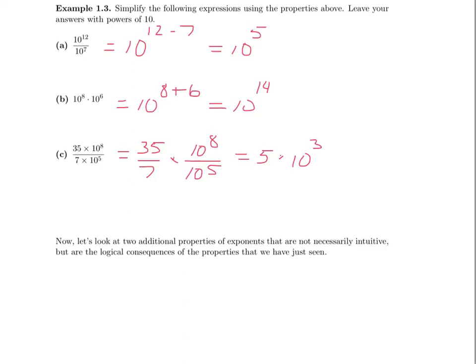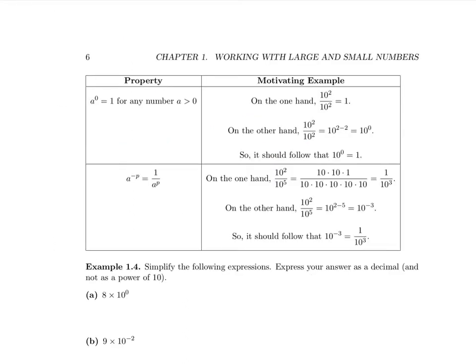Now let's look at two additional properties of exponents that are not necessarily intuitive, but are logical consequences of the two properties we have just seen. The first property says that any positive number raised to the power 0 is equal to 1. So, for example, 2 to the 0 equals 1; 3 to the 0, 4 to the 0, even 0.67 raised to the 0 — all of those equal 1.